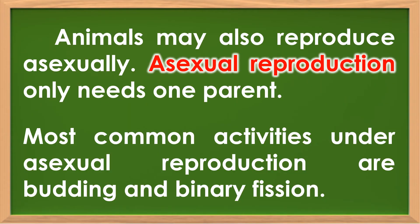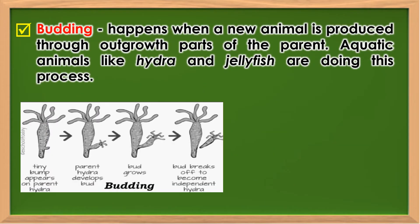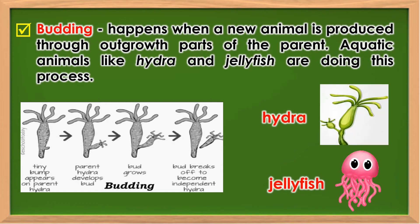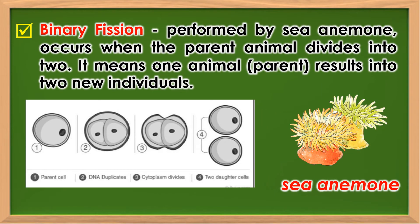Animals may also reproduce asexually. Asexual reproduction only needs one parent. Most common types under asexual reproduction are budding and binary fission. Budding happens when a new animal is produced through outgrowth parts of the parent. Aquatic animals like hydra and jellyfish do this process. Binary fission, which is performed by sea anemone, occurs when the parent animal divides into two, meaning one parent results in two new individuals.